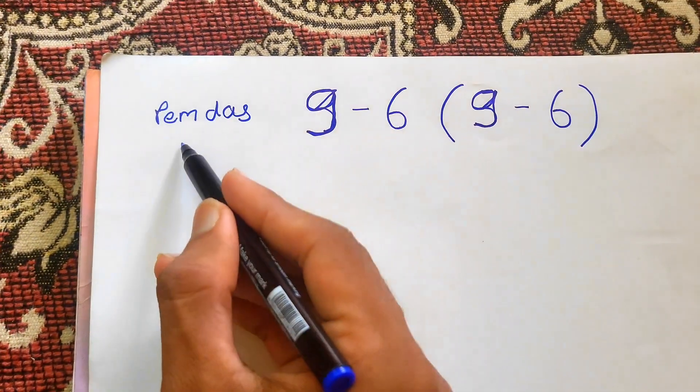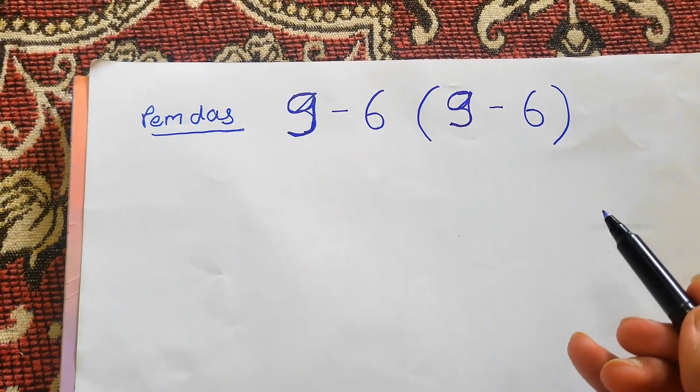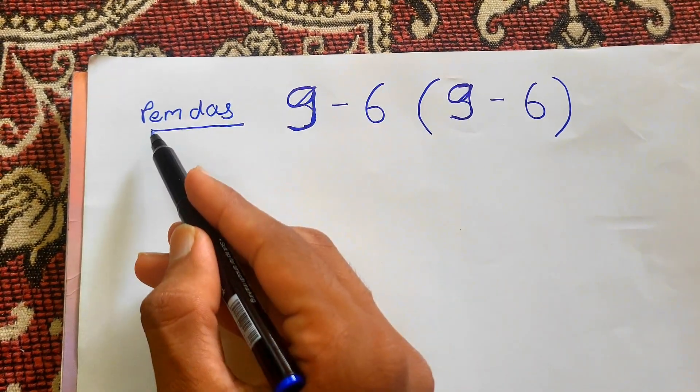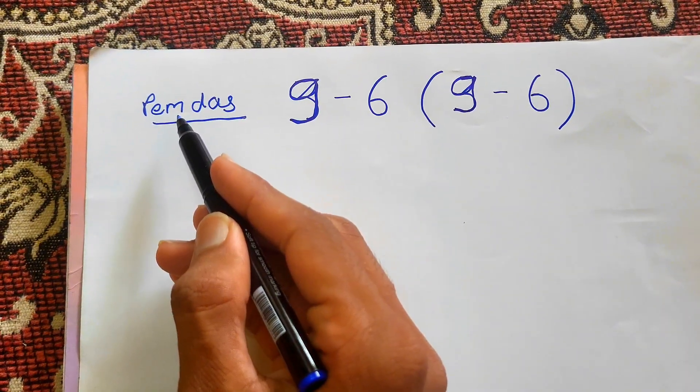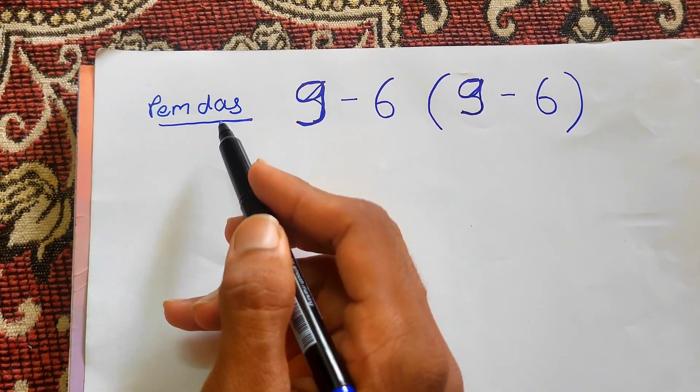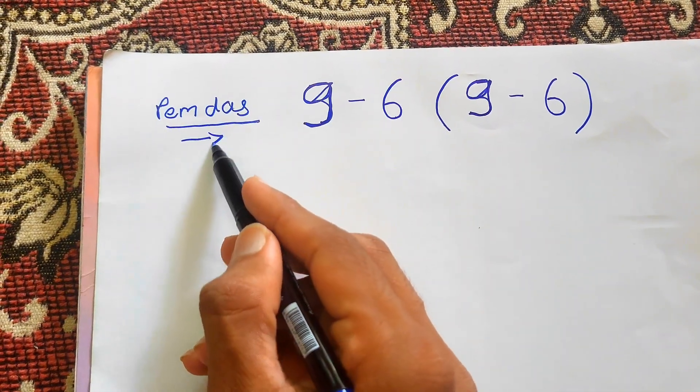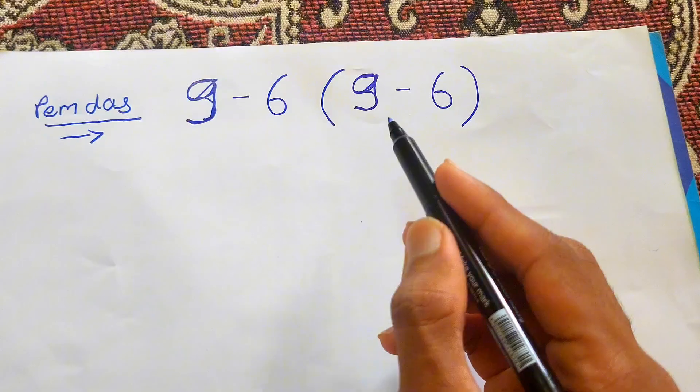PEMDAS stands for Parenthesis, Exponents, Multiplication, Division, Addition, and Subtraction. All these orders we need to do from left to right as the order of operation says. So now we'll first do the parenthesis.